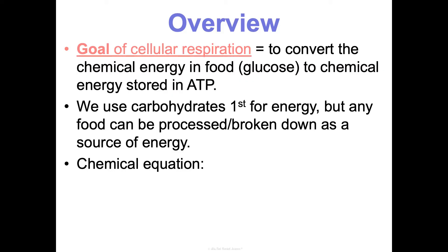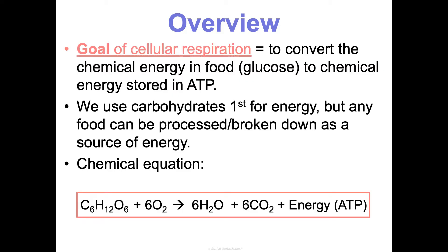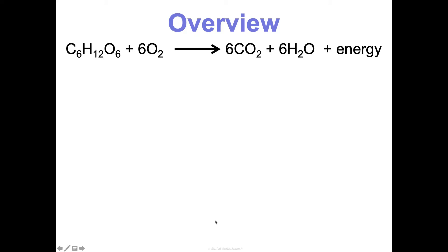The chemical equation, which is like the recipe for cellular respiration, is C6H12O6 plus 6O2 makes six waters, six carbon dioxide, and energy in the form of ATP. It's not making energy because we're just converting the form of energy. This might look familiar to you — that's because it's basically the opposite of your photosynthesis equation. The ingredients of one are the results of the other.